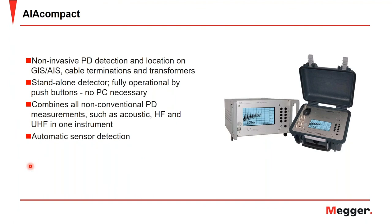Finally, we have the AIA Compact, which is a non-invasive PD detection and location instrument for GIS, AIS, cable terminations, and transformers. It is a standalone detector fully operational by push buttons — no PC necessary. It combines all non-conventional PD measurements — acoustic, high frequency, and ultra-high frequency — in one instrument, and features automatic sensor detection, configuring itself appropriately based on the sensor plugged in.